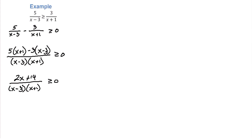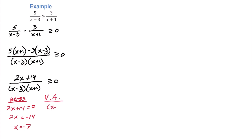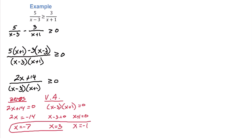From here, we can find the zeros or x-intercepts. To find zeros, we set the numerator equal to zero and solve. Subtracting 14 and then dividing by 2, we get x is negative 7. We also need to find the vertical asymptotes. To do that, we set the denominator equal to zero. Set each of these factors equal to zero and solve those independently. We get x equals 3 and x equals negative 1. These are the boundary points that we will place on a number line. Make sure we put those in order. We have negative 7, negative 1, and 3.